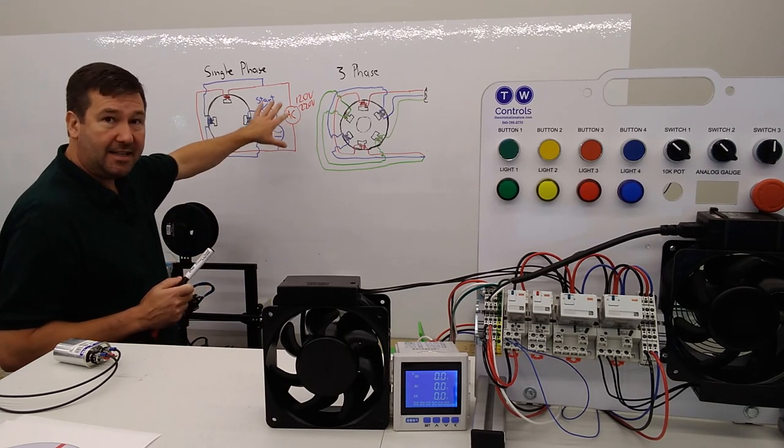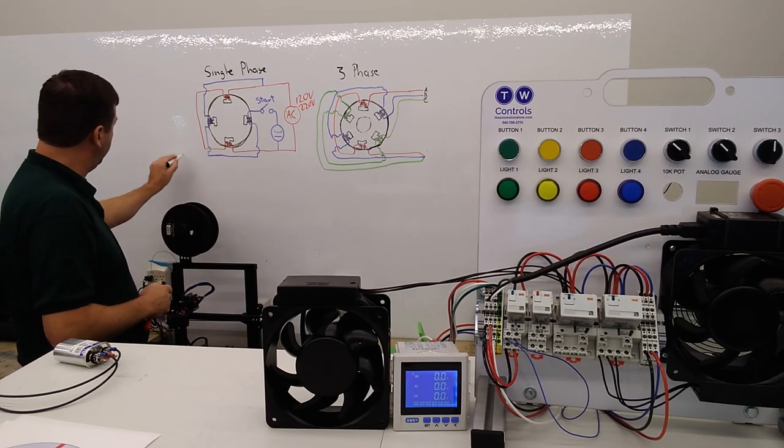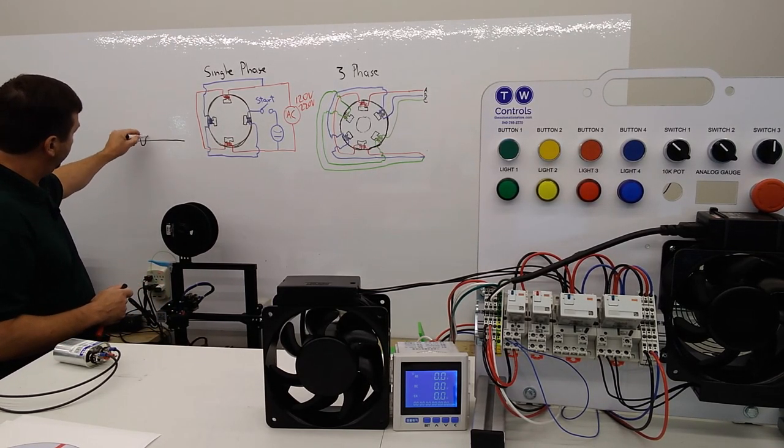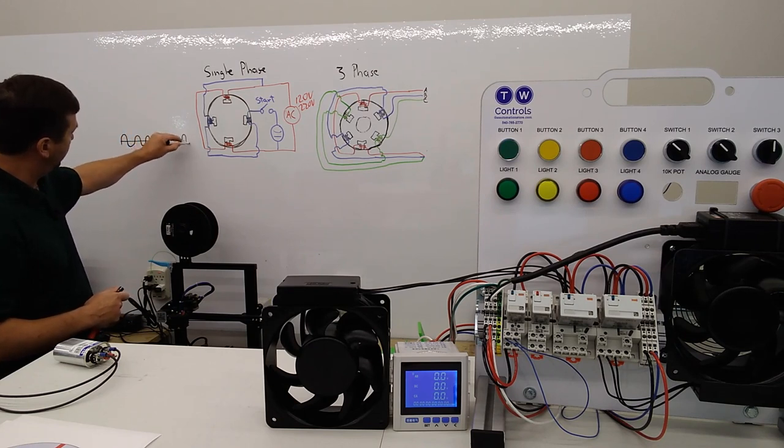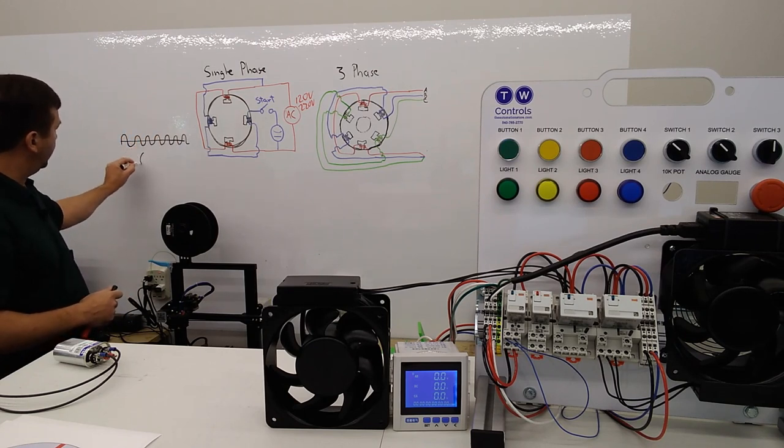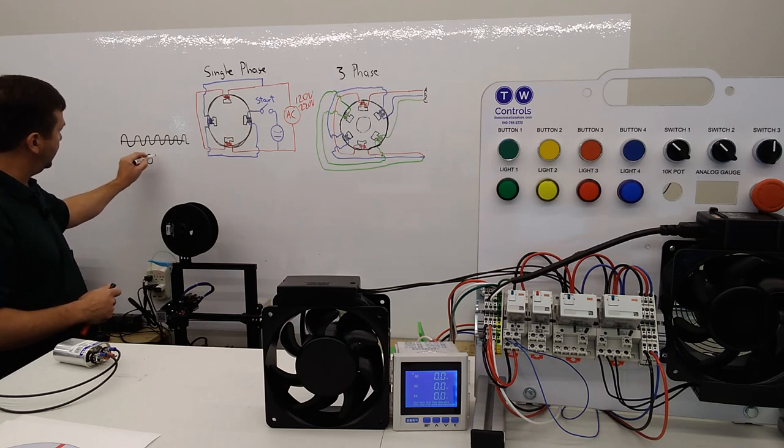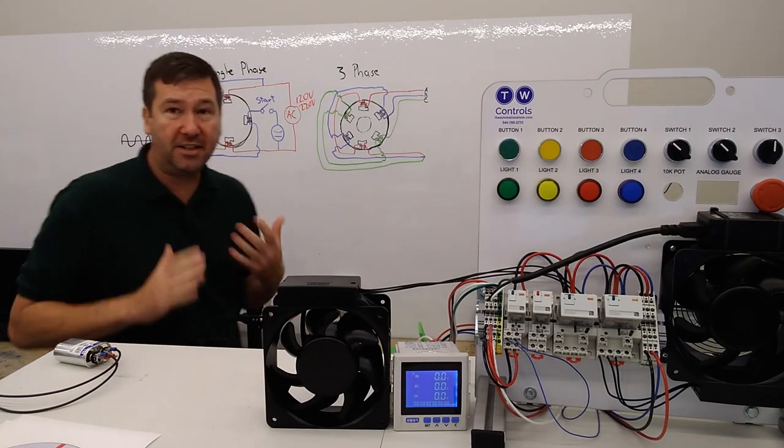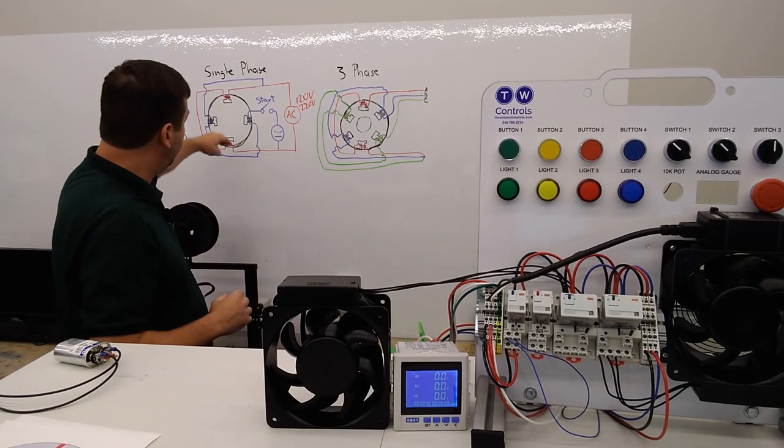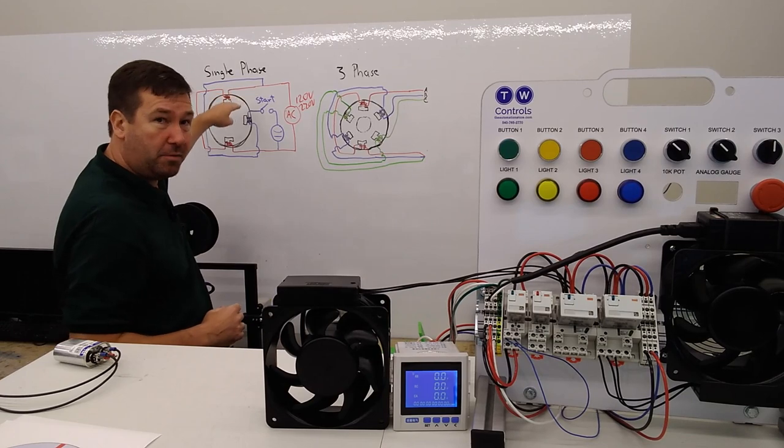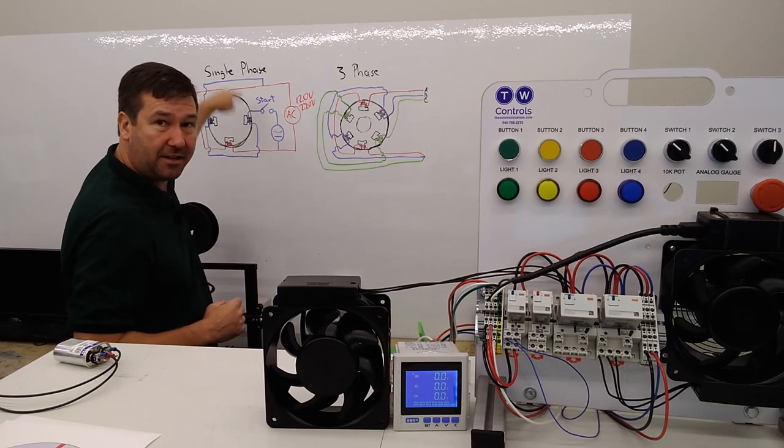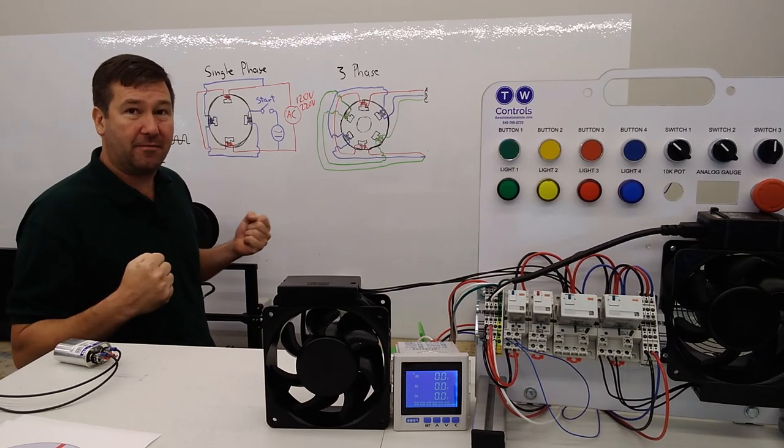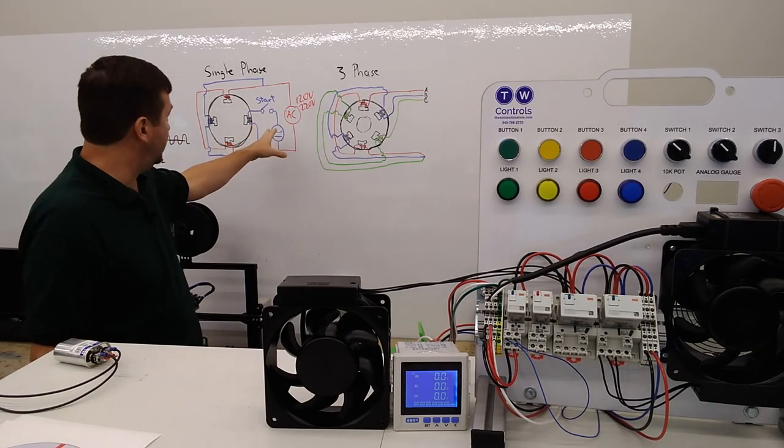On that, you're going to get an AC sine wave. And if this is your zero line, then you're going to be seeing a sine wave that looks like this. It's going to go plus, minus, plus, minus, plus, minus, and it's going to do this at 60 hertz or 60 cycles per second. And what that's going to do is it's going to make these poles bounce back and forth between positive, negative, positive, negative, positive, negative, just like a tug of war. So it's not going to actually get anywhere; it's just going to tug back and forth. And that's where the start winding comes in.